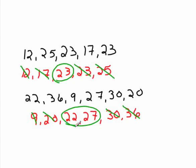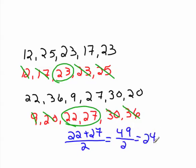One way to find that is to add the two numbers together, 22 plus 27, and divide that answer by 2. 22 plus 27 is 49, divided by 2 is 24 and 1 half, which means the median of this second data set is 24 and 1 half.